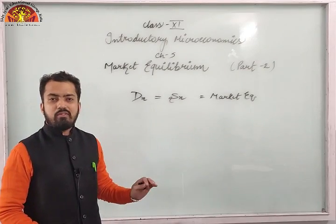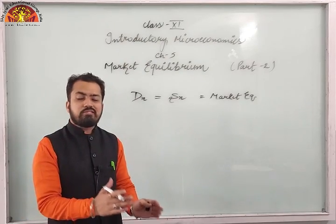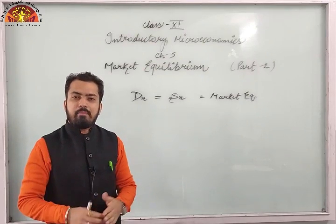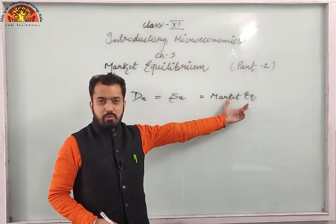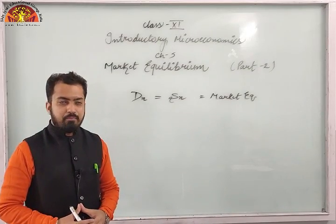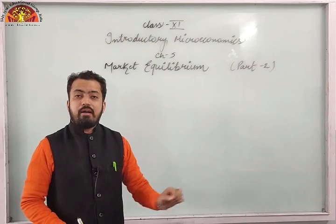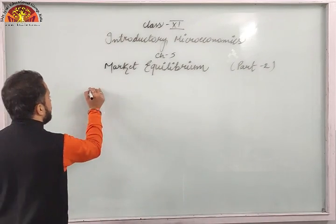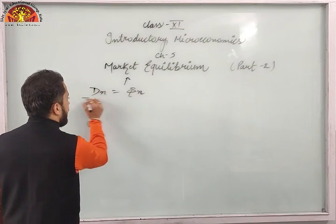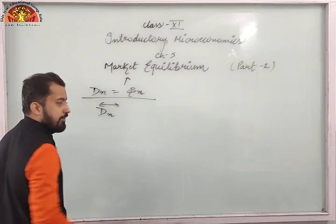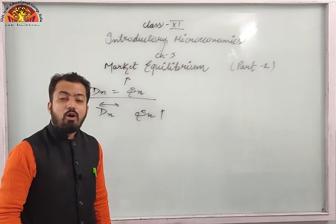We also covered shifts in demand and supply — situations where one market force is constant and the other changes. Now in Part 2, we will discuss cases where both demand and supply change simultaneously. To recap: when demand of X equals supply of X (DX = SX), that is market equilibrium. Now consider the case where demand of X is constant but supply of X is increasing.